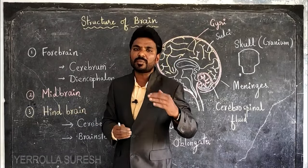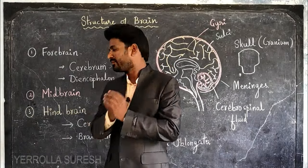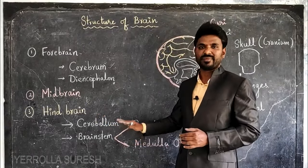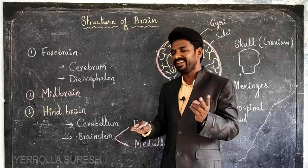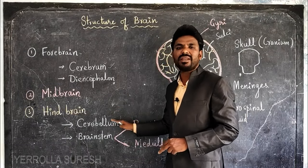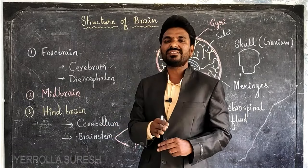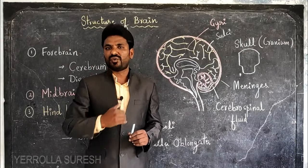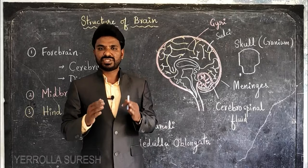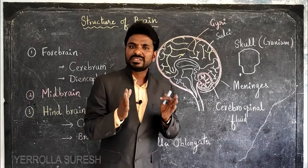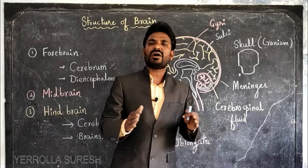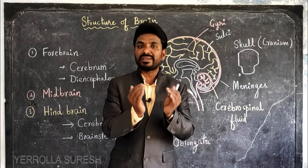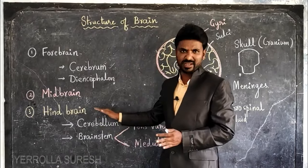The hindbrain is the third part of the brain — it is the back part. It has two parts: cerebellum and brainstem. The cerebellum involves in regulating and controlling the balance, posture, and equilibrium of our body while walking, sitting, standing, jumping, or doing any activities.